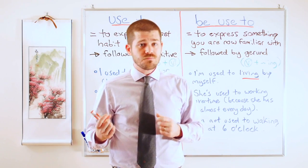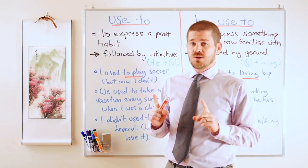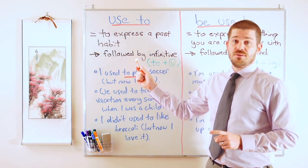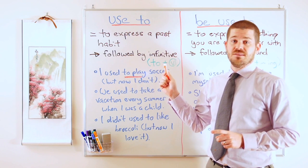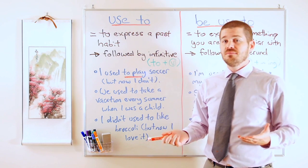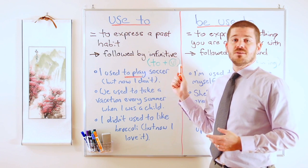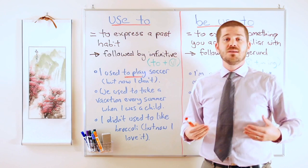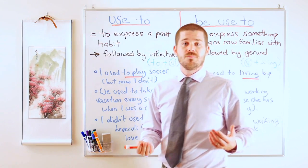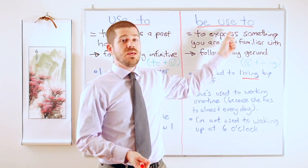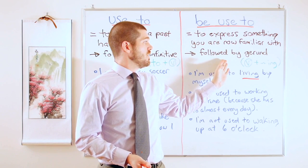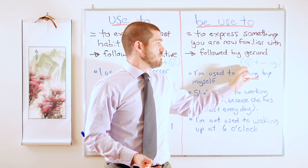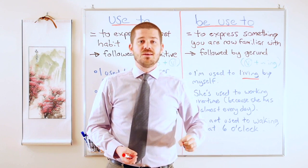I also want to look at a grammar difference between each. With 'used to,' it will always be followed by the infinitive — that is, 'to' plus a verb. For example: to go, to take, to sleep, to eat. With 'be used to,' it will always be followed by a gerund — that is, verb plus '-ing.' For instance: taking, going, sleeping, eating.